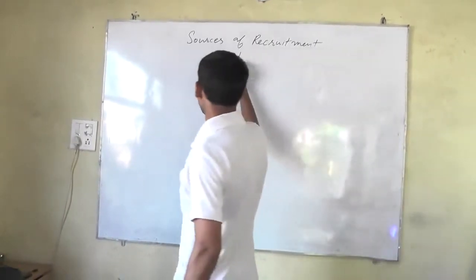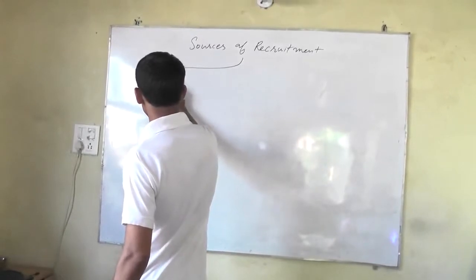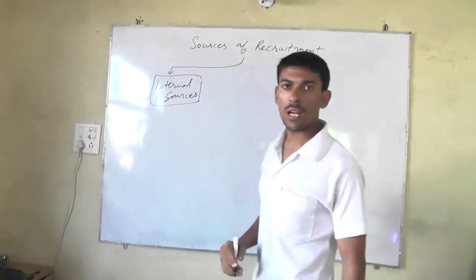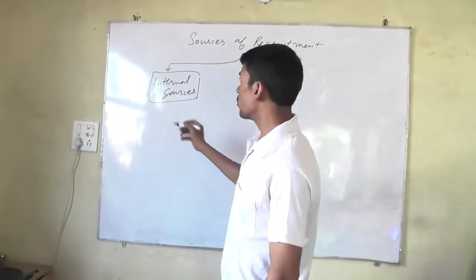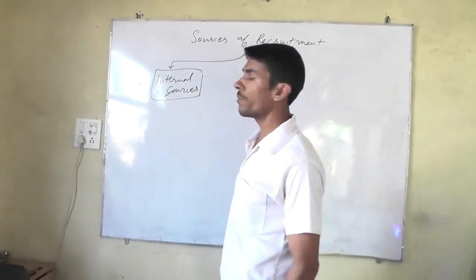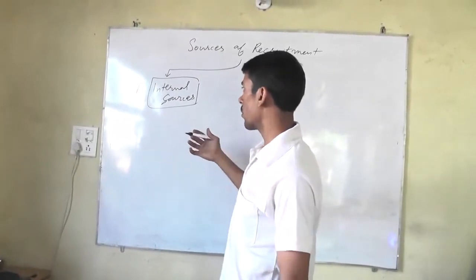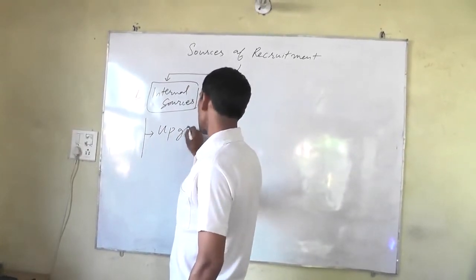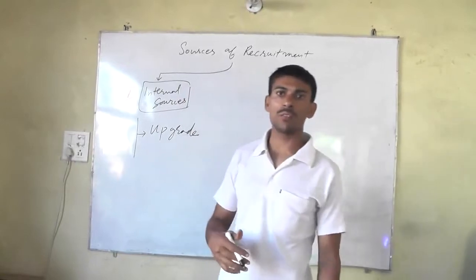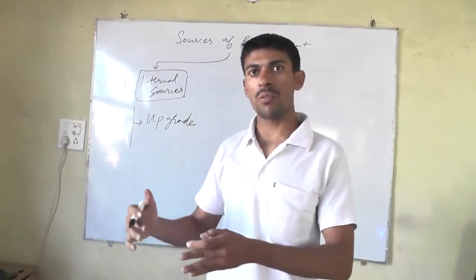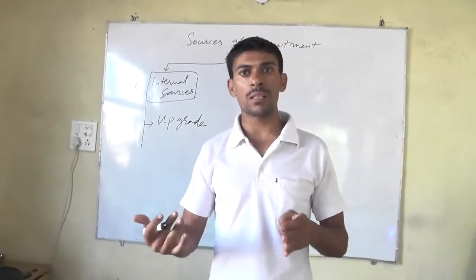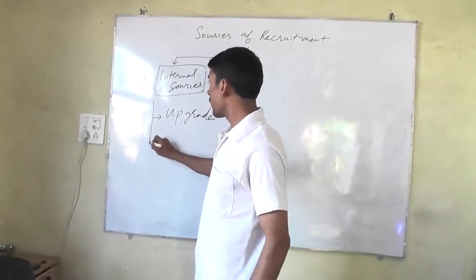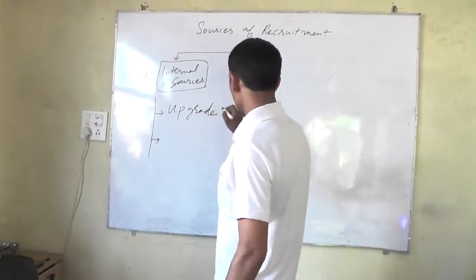First is internal sources. When you need employees, you can use the first resource of recruitment, that is the internal source. This means you can upgrade — for example, if you have a helper, you can upgrade them to computer operator, then upgrade to team leader. So this is an upgrade, or you can call it a promotion.